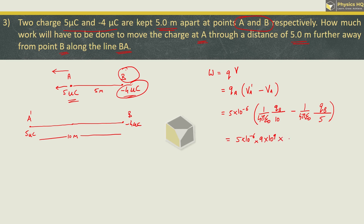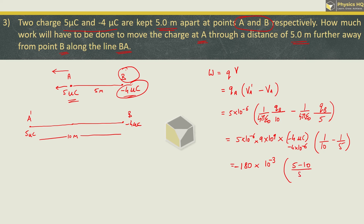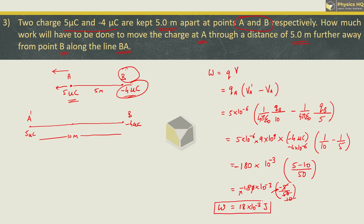Taking 1 upon 4πε₀ as 9×10⁹ and the charge at B as minus 4×10⁻⁶ coulomb, we compute: 5×10⁻⁶ into 9×10⁹ into (minus 4×10⁻⁶) into (1/10 minus 1/5). This gives 5 minus 10 upon 50, resulting in minus 180×10⁻³ into (minus 1/10), giving a total work done of 18×10⁻³ joules.